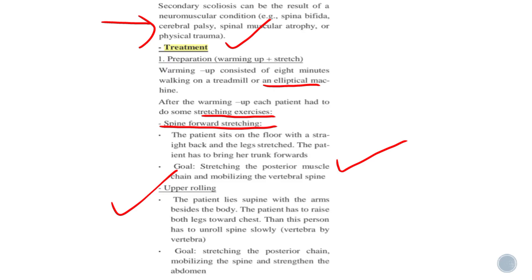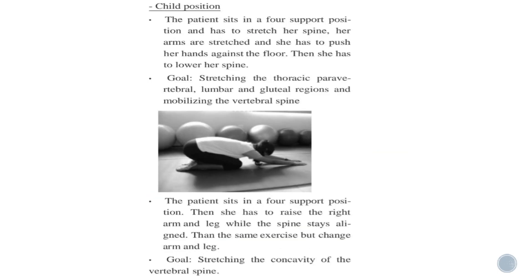Upper rolling: the patient lies supine with the arms beside the body and raises both legs toward the chest, then unrolls the spine slowly, vertebra by vertebra. The goal is to stretch the posterior chain, mobilize the spine, and strengthen the abdominal muscles.